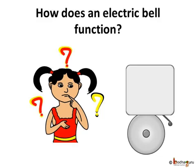Now that we are clear about the electromagnet, let us now understand how an electromagnet is used in the functioning of an electric bell.